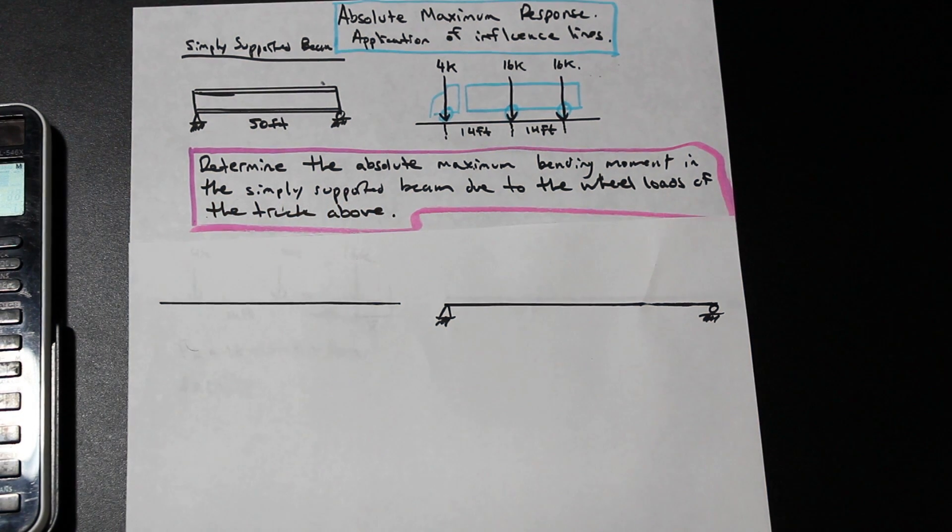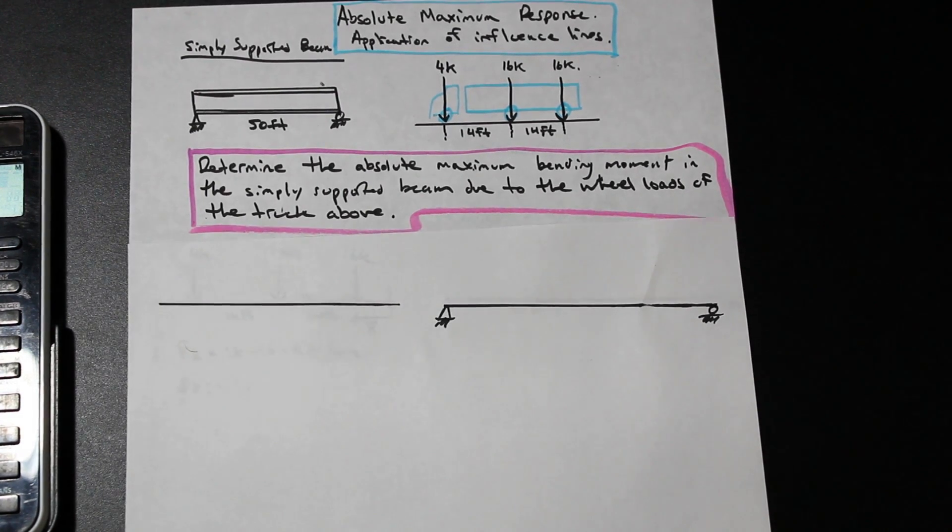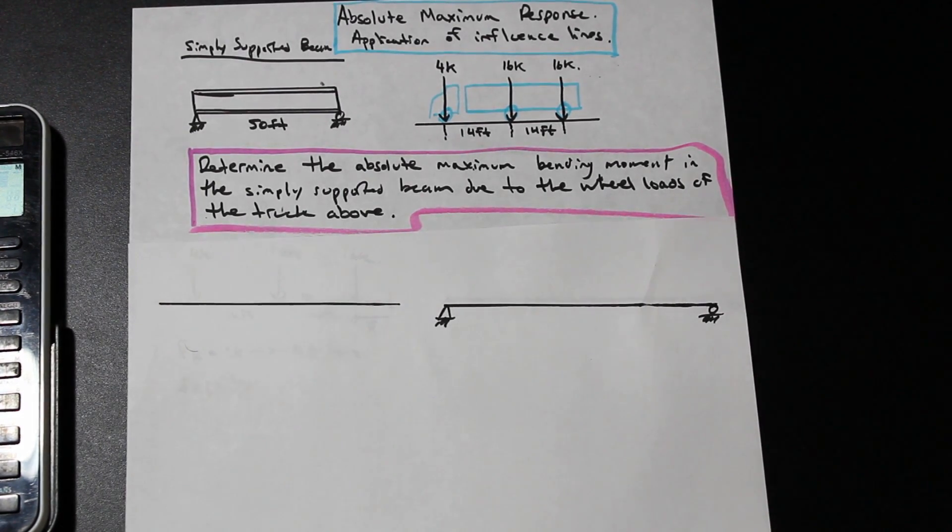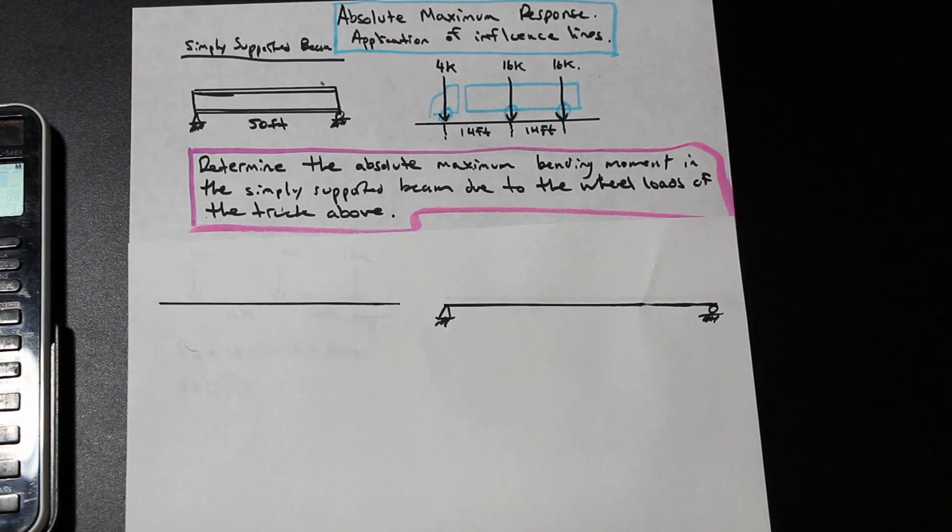Hi guys, welcome back. Fred here at Math and Engineering. We're going to do a quick problem for you on the application of influence lines, namely the absolute maximum response.